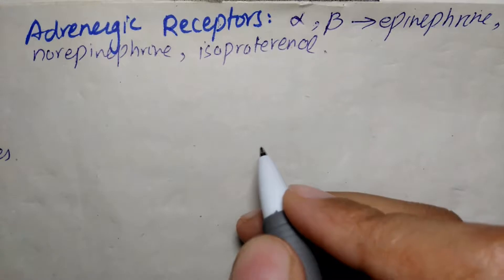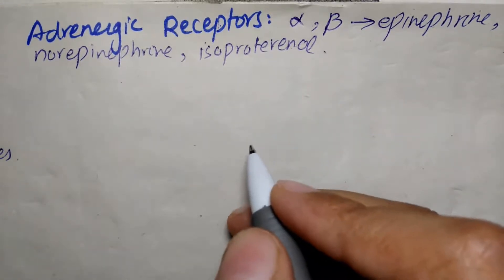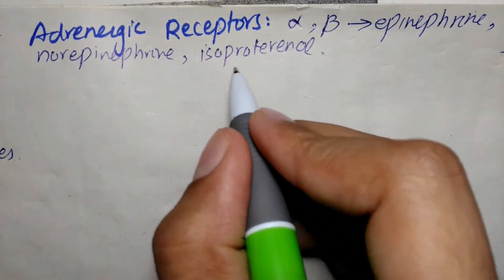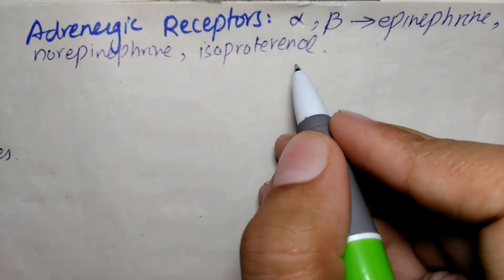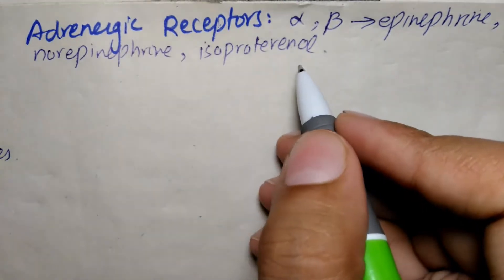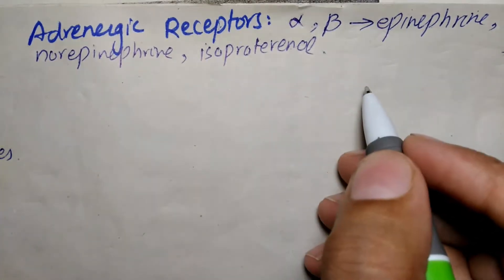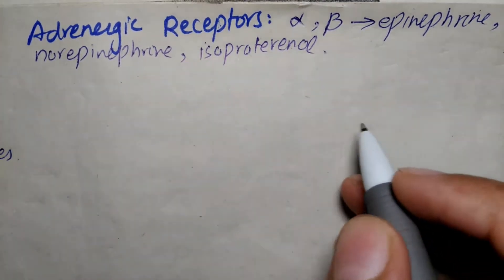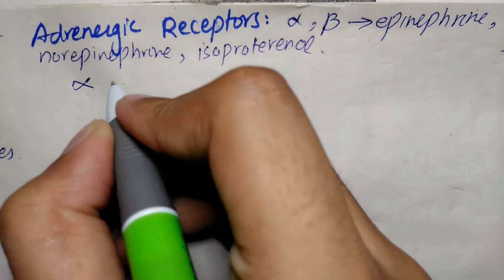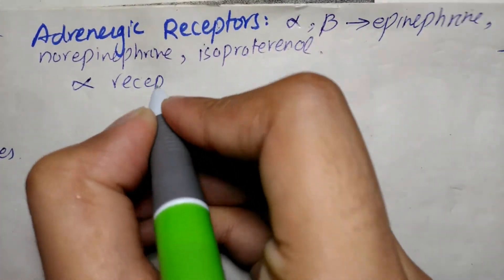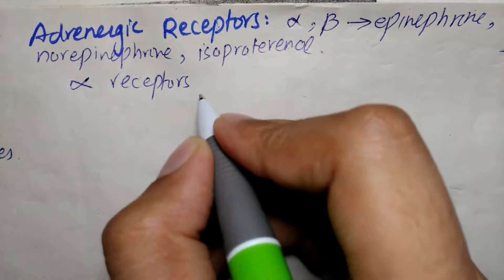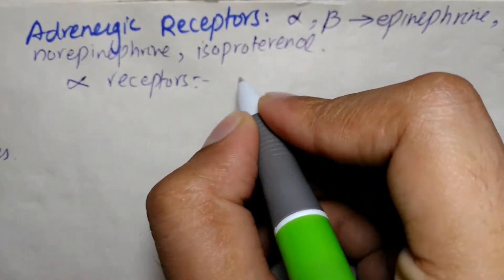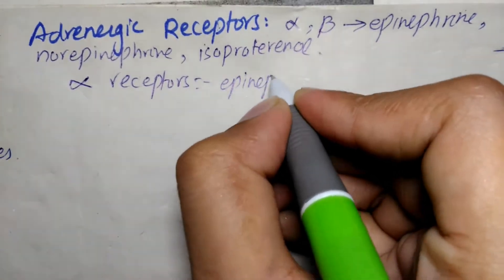Alpha adrenoceptors show a weak response to the synthetic agonist isoproterenol, but they are responsive to the naturally occurring catecholamines — epinephrine and norepinephrine. We can say that alpha receptors have more affinity for epinephrine and norepinephrine.